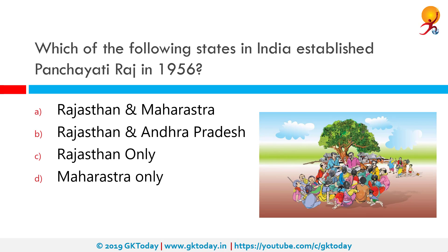Which of the following states in India established Panchayati Raj in 1956? The correct answer is Rajasthan and Andhra Pradesh. The Panchayati Raj system was first adopted by the state of Rajasthan in Nagar district on 2nd October 1956. The second state was Andhra Pradesh, while Maharashtra was the ninth state.